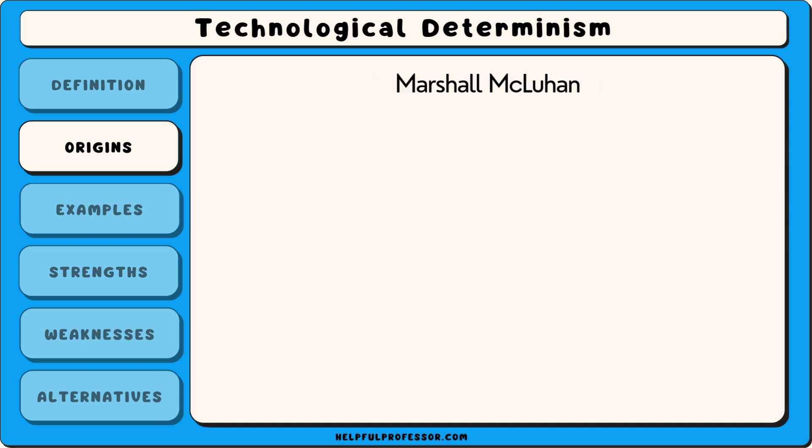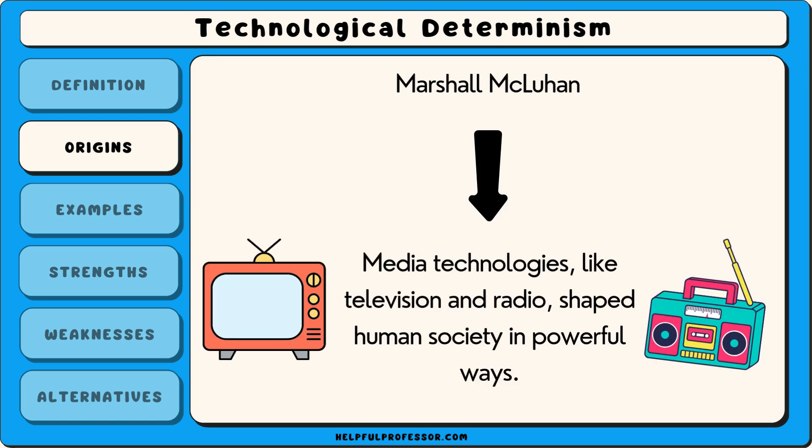Later in the 20th century, theorists such as Marshall McLuhan popularized the idea that media technologies like television and radio were shaping human society in powerful ways. Over time, technological determinism became a key concept in discussions about the impact of new inventions on society.